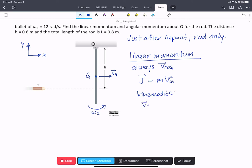So we can write that V_G is going to be equal to V_O plus omega 2 crossed with R_G with respect to O. V_O, O is a pin, so the velocity is zero.